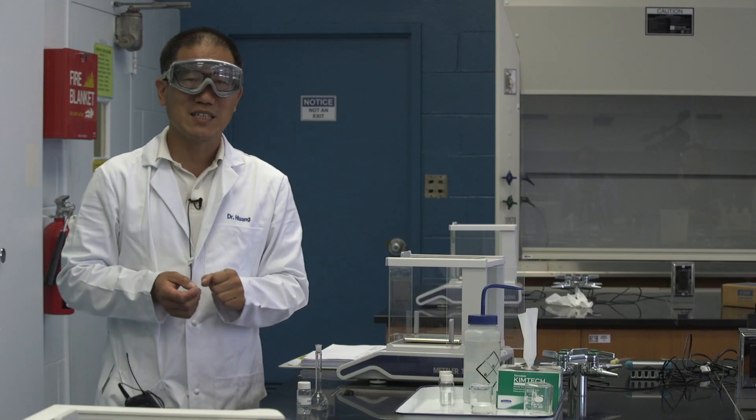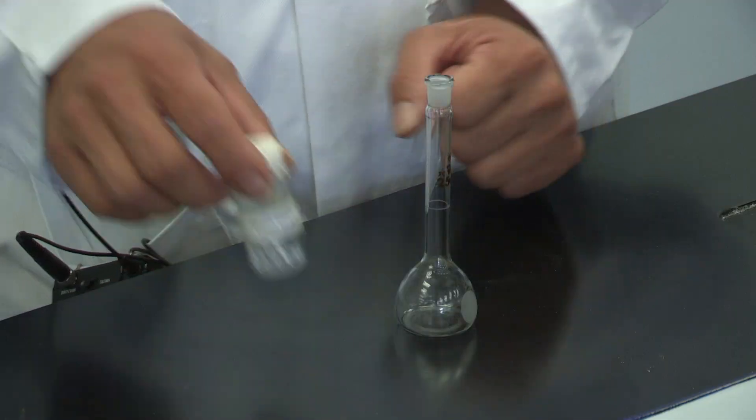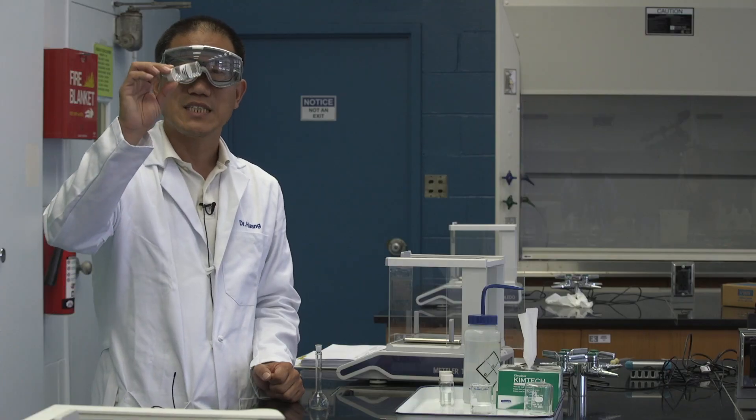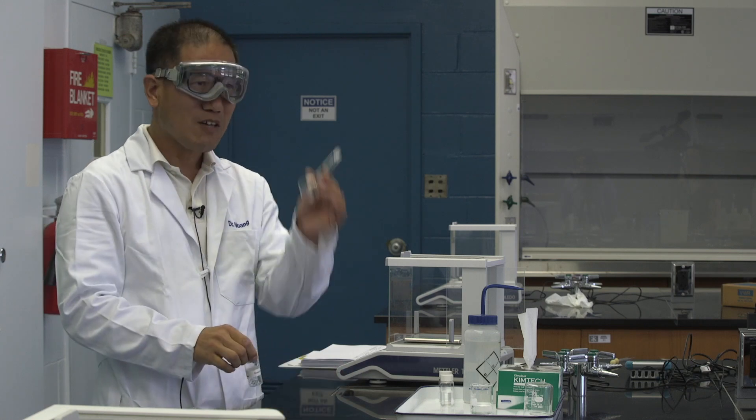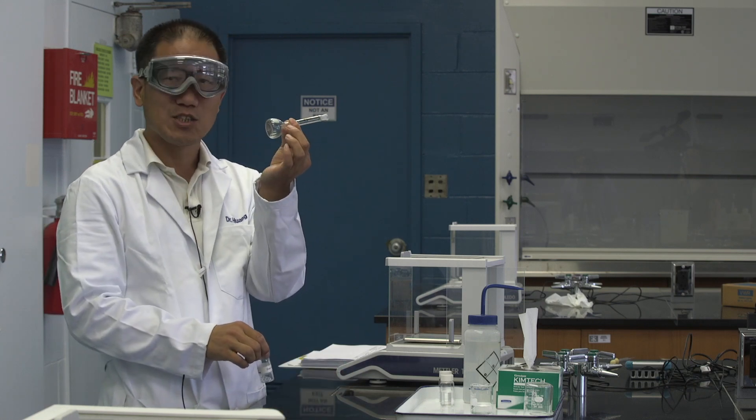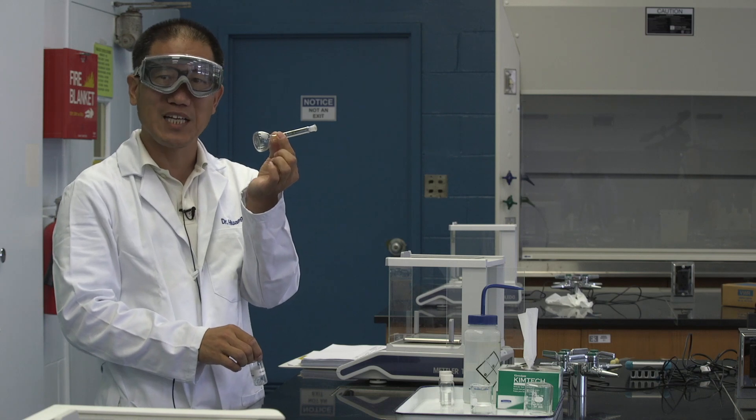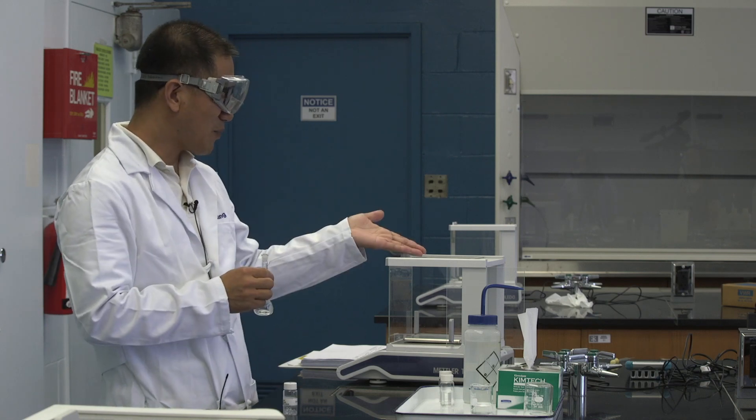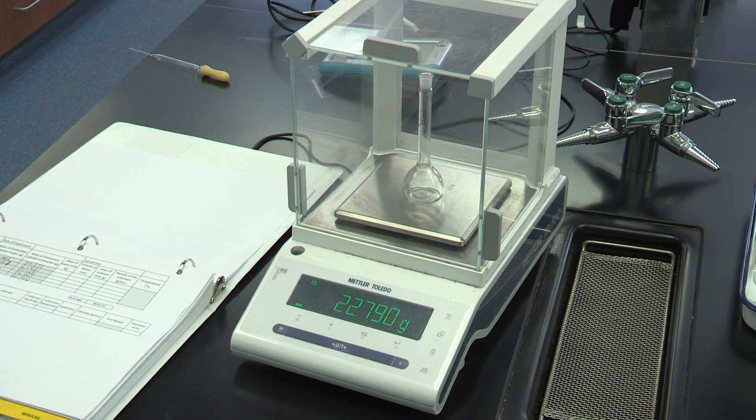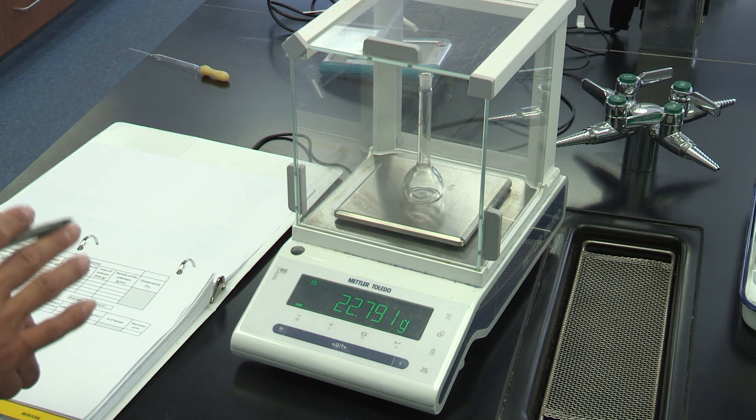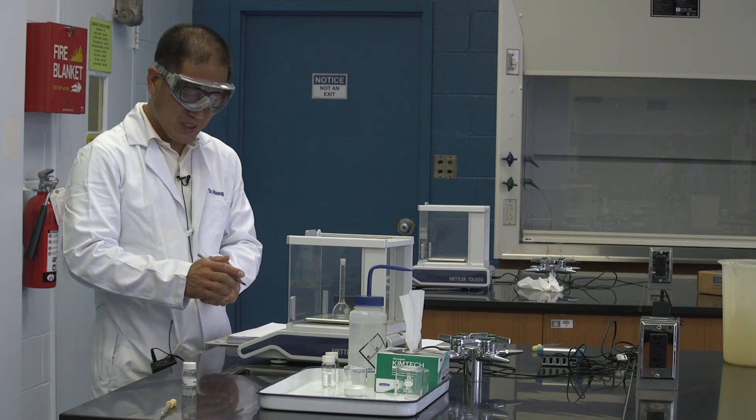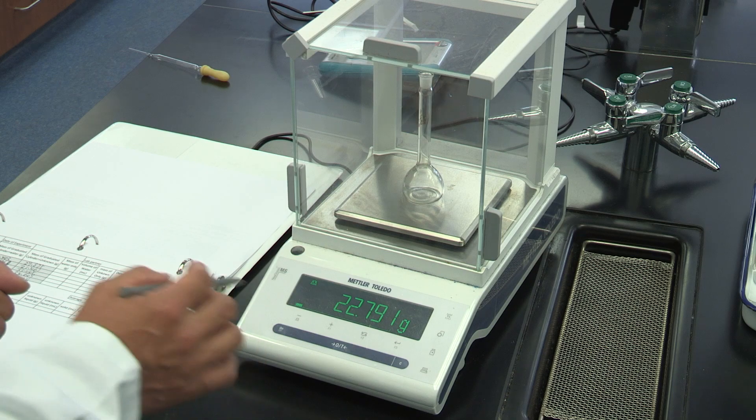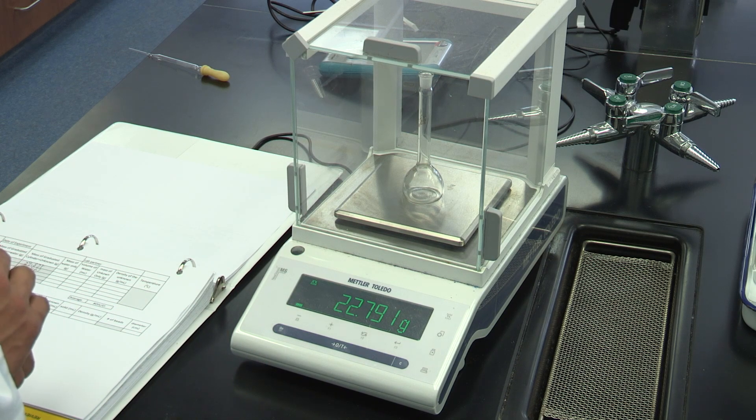For the second part of the experiment, we are trying to determine the density of the unknown insoluble solid, which is in this vial. With the volumetric flask, which is 25.00 milliliters and the electronic balance. First, let's get the mass of the empty volumetric flask. With the method I just told you. The mass is 22.791 grams.